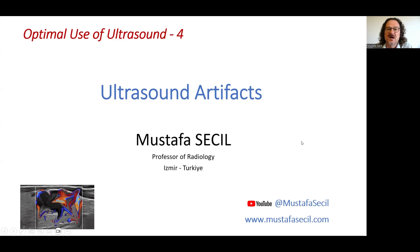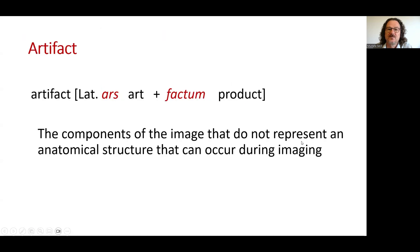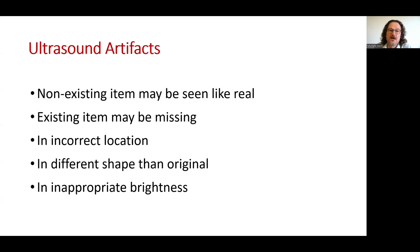This lecture will be about ultrasound artifacts. Artifacts are the components of the image that do not represent an anatomical structure that can occur during imaging. In ultrasound, a non-existing item may be seen as real, or an existing item may be missing, maybe in the correct location but in a different shape than the original, or in inappropriate brightness.